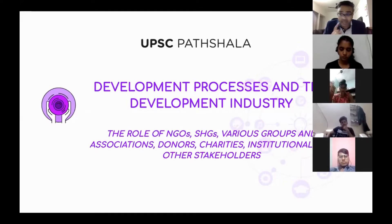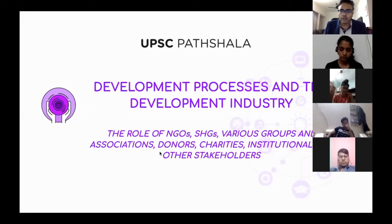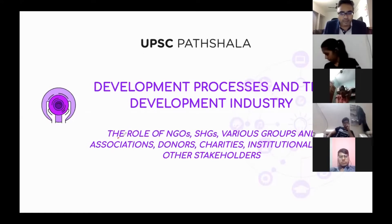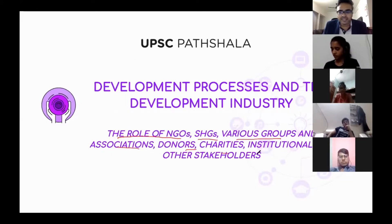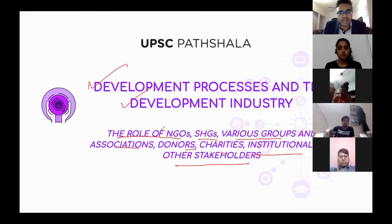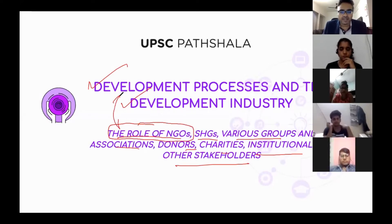In this process, government is not the only sector and not the only player. We study what government does for development in economics — social development, poverty, all of that. In this chapter, we will be talking about the role of NGOs, self-help groups, various groups and associations, donors, charities, institutions, and other stakeholders.